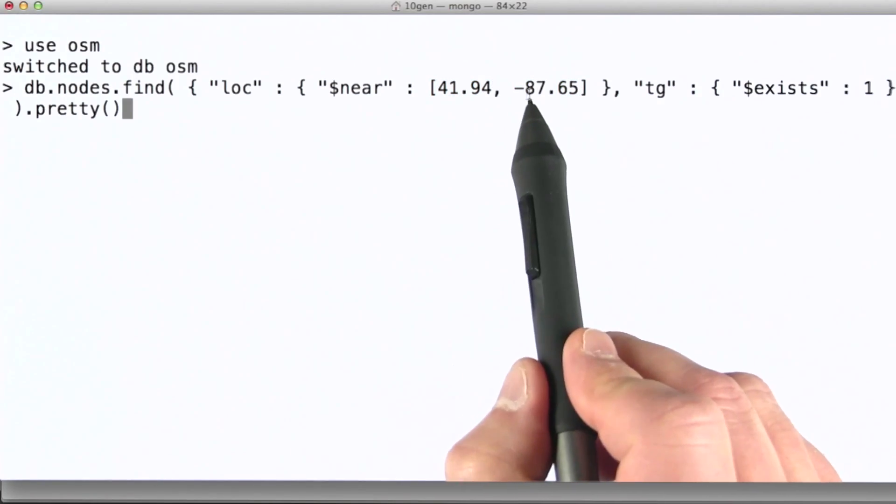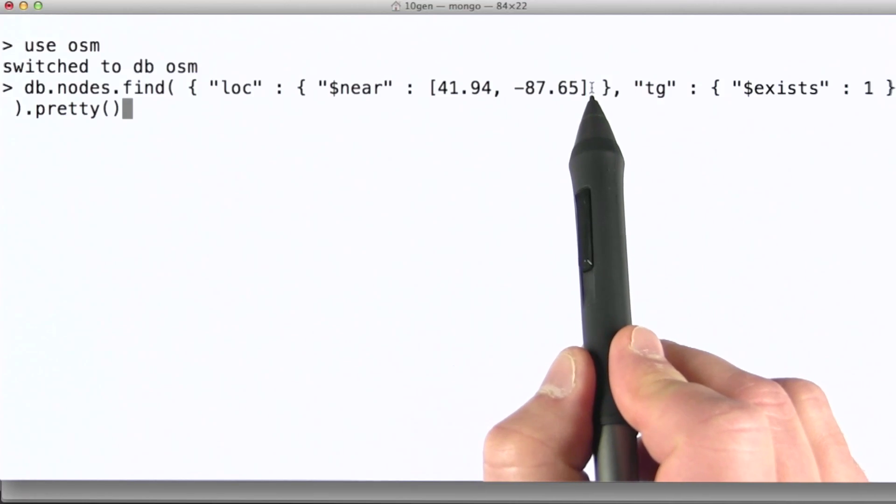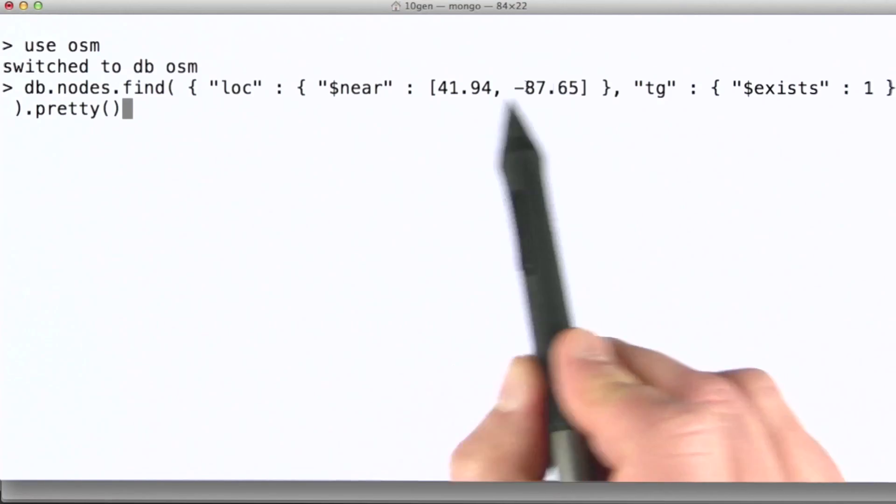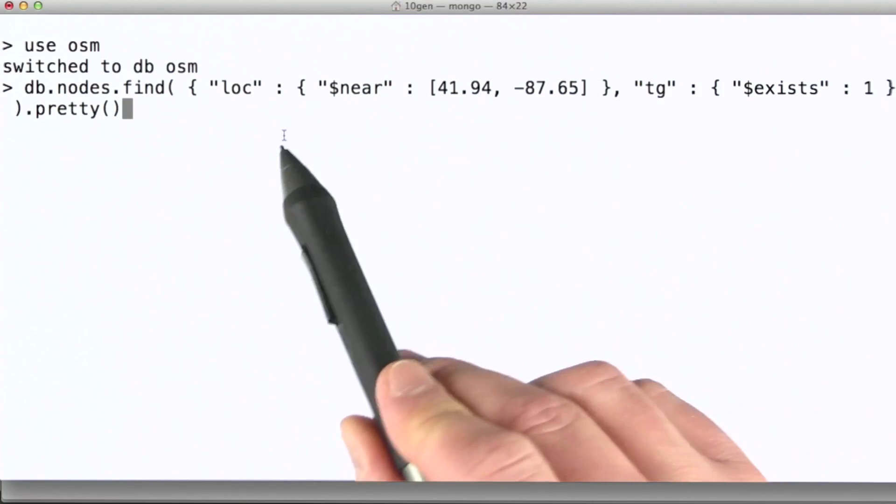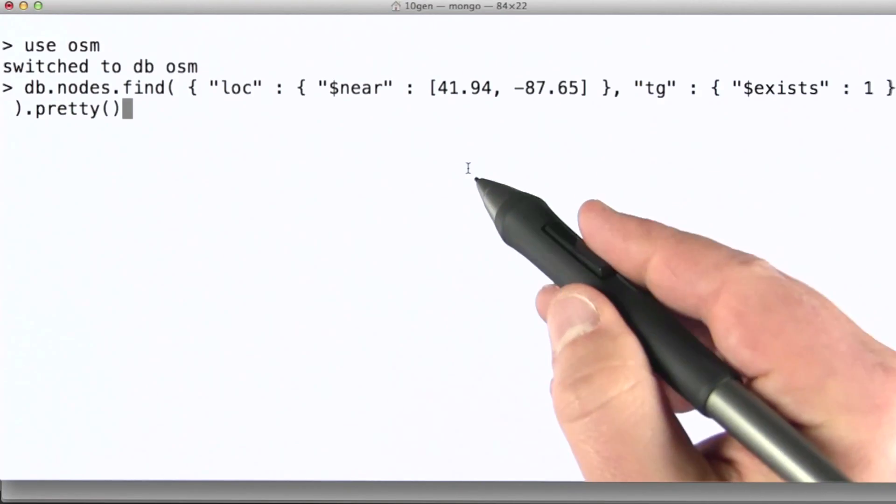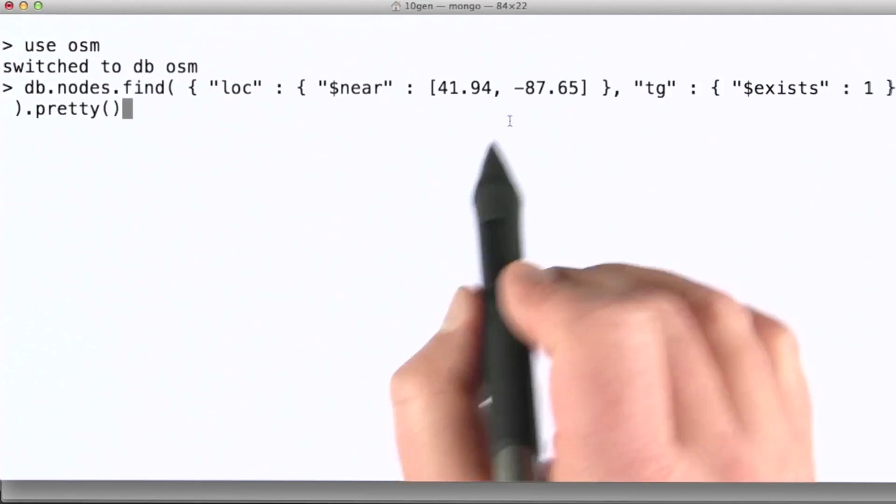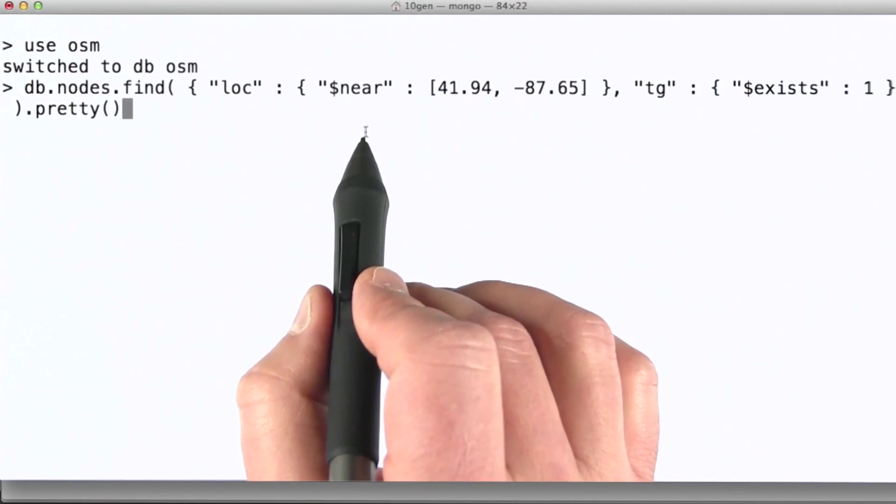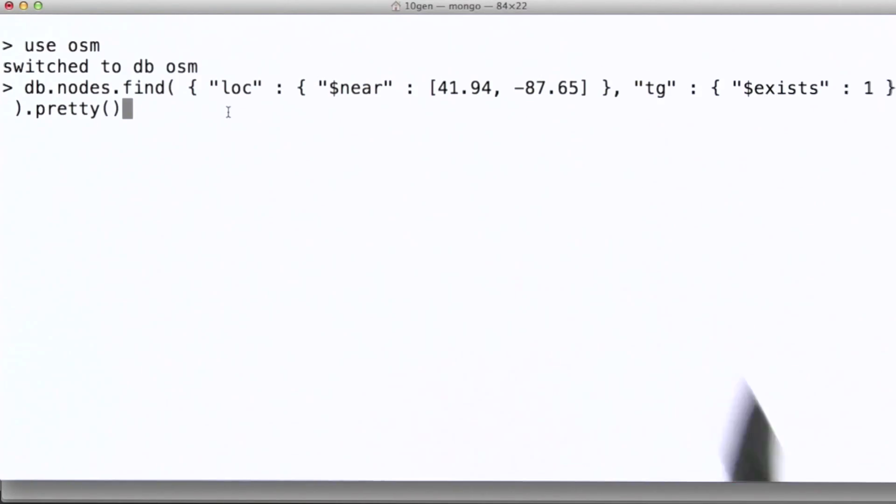This location happens to be quite close to Wrigley Field. So what we're going to get are a number of restaurants, cafes, convenience stores, that sort of thing in that neighborhood. Imagine you've just walked out of Wrigley Field and you're looking to see what's nearby on your phone. This is the type of query we might do in the back end of an application to support that sort of thing.